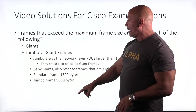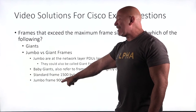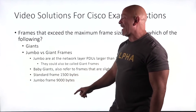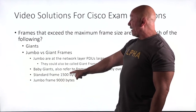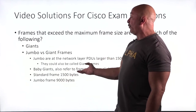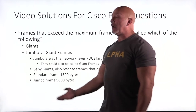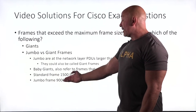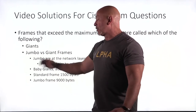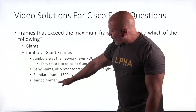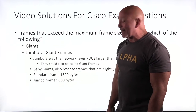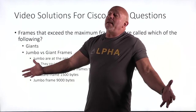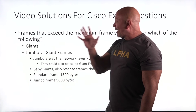Jumbos could be called Giants as well. The standard frame size is 1500 bytes. To be a jumbo frame you're up to nine thousand bytes. So 1534 is a baby giant; 1600 bytes is a giant; all the way up to nine thousand bytes is a jumbo frame.